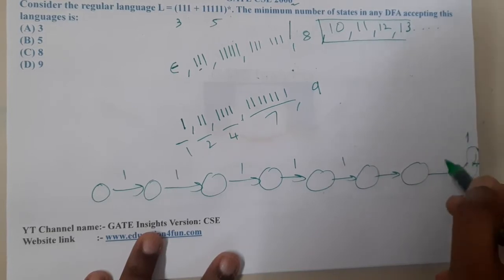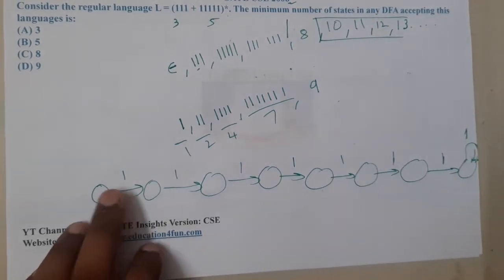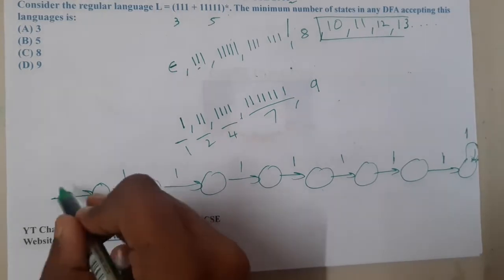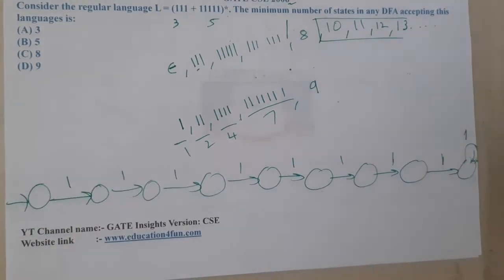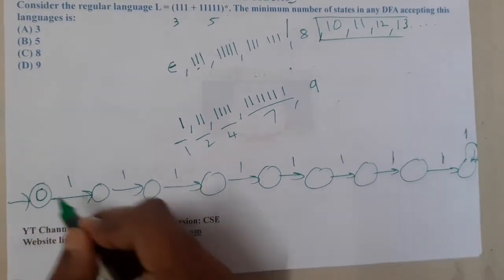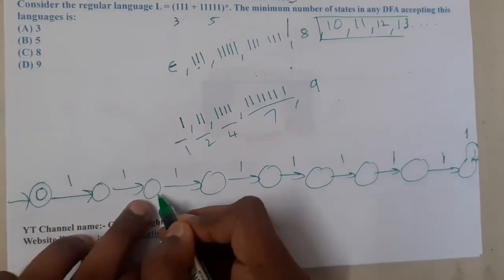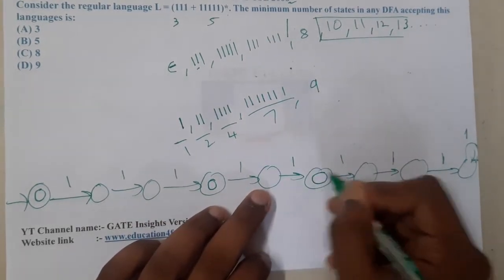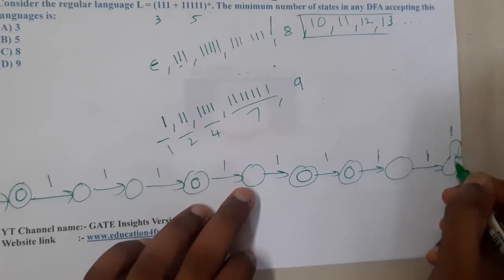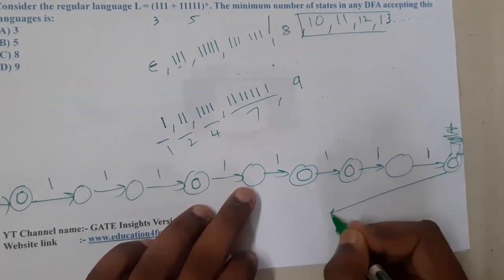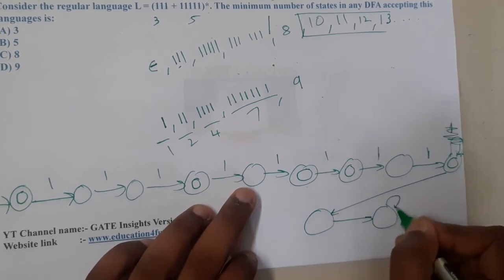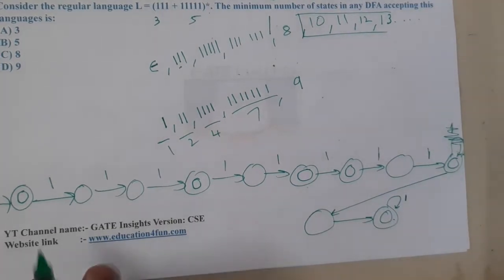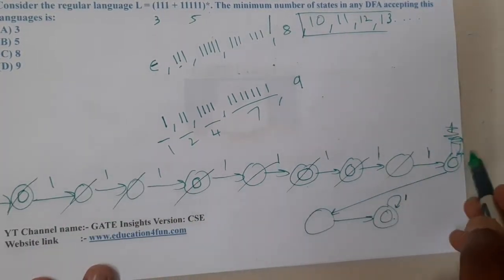From here it will accept all ones. So let us assume this is our first state — 1, 2, 3, 4, 5, 6, 7. I think I need to add one more. It is going to accept epsilon, not accept one or two ones, accept three ones, not accept four ones, accept five ones, six ones, not accept seven ones, accept eight ones, not accept nine ones, and accept from ten ones. So how many states are required? 1, 2, 3, 4, 5, 6, 7, 8, 9, 10, 11 — I got 11 states.